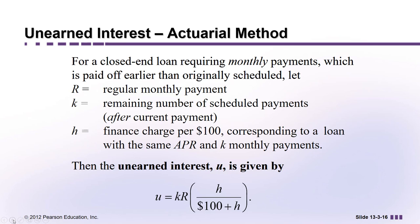K represents the remaining number of scheduled payments after the current payment. For example, if you were originally scheduled to make 12 months of payments but decide to pay it off after nine months, K would be three — the 10th, 11th, and 12th payments are the remaining ones. So K equals 3.